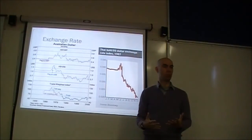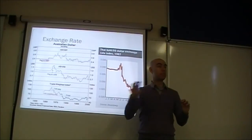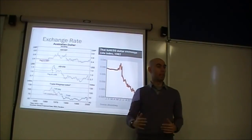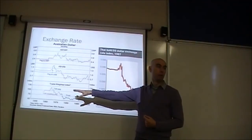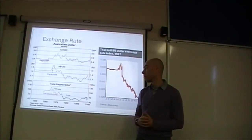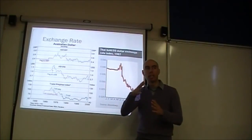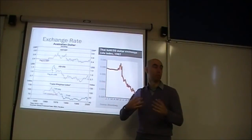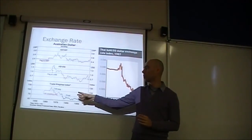So each day, the Reserve Bank would say this is what the exchange rate is going to be compared to each of these different currencies. And the next day, it would be re-valued against all the currencies to maintain the trade-weighted index value at that same amount. Afterwards, it became a bit of a crawling peg where it would change day-to-day, but it was still pegged, fixed at that rate. And in 1983, it was floated.